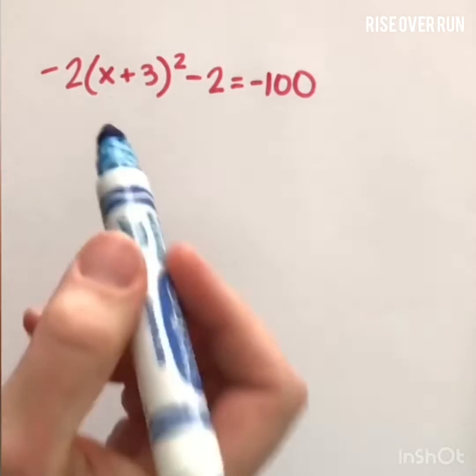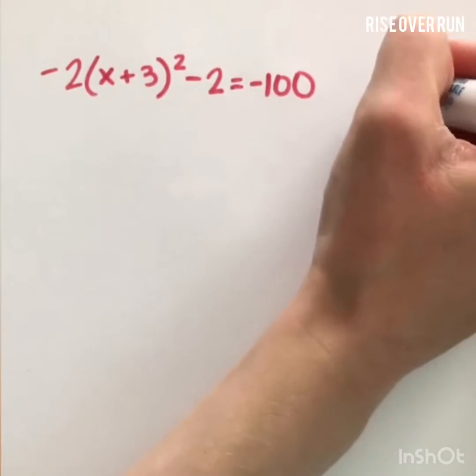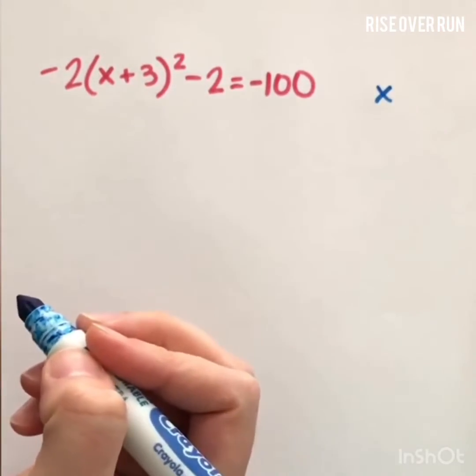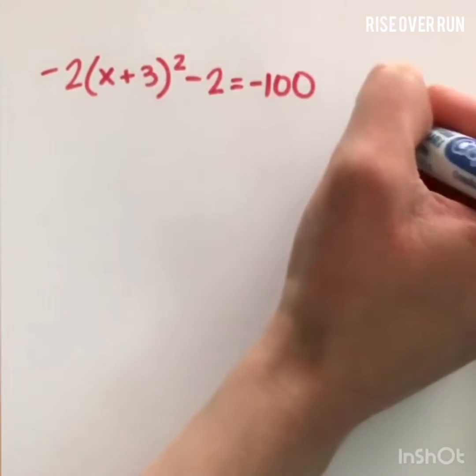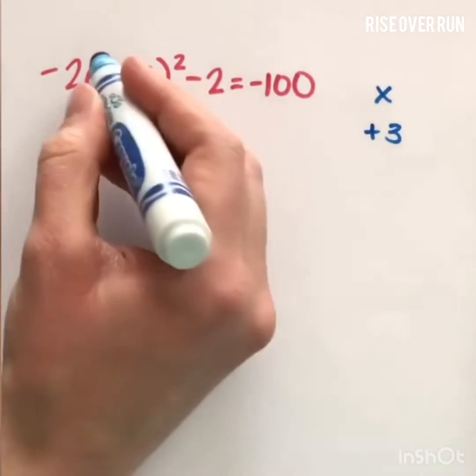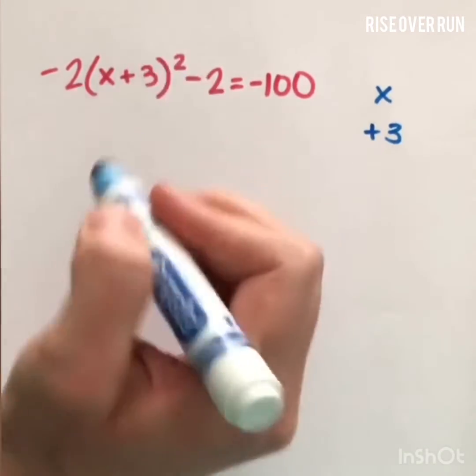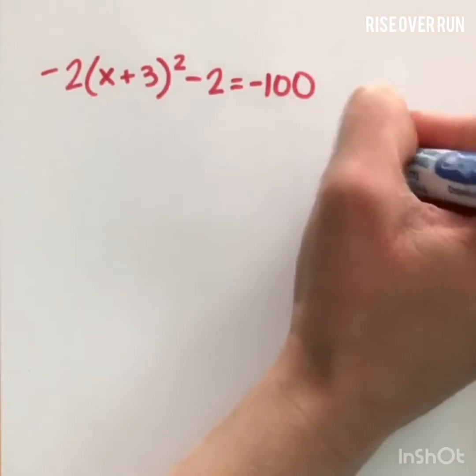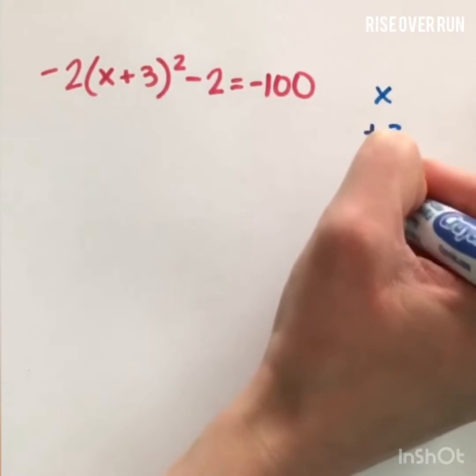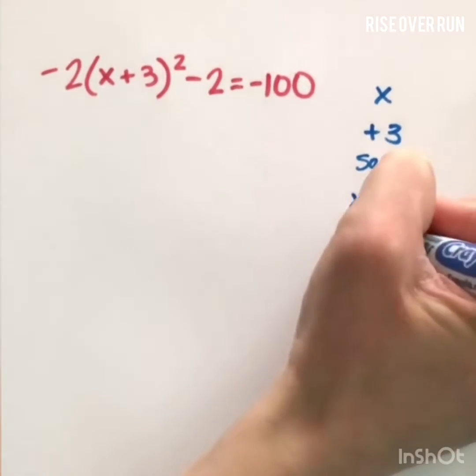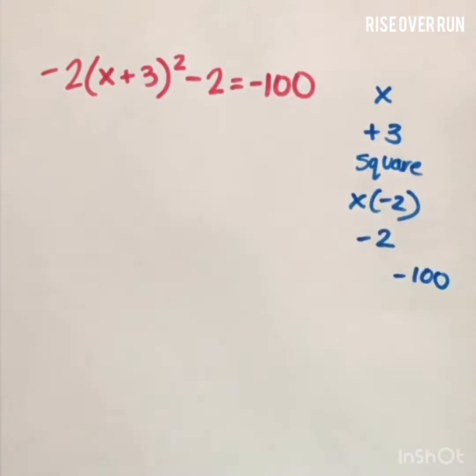If those equations seem simple, let's try this one. Again, if we look at what happened to the variable, we can decide which order we're going to do the operations. So x here, first we added 3. Then, did we multiply, or did we do the exponent? Well, order of operations says that the exponent would happen first. So it got squared, and then it got multiplied by a negative 2, and then subtracted 2. All of that gave us a value of negative 100.